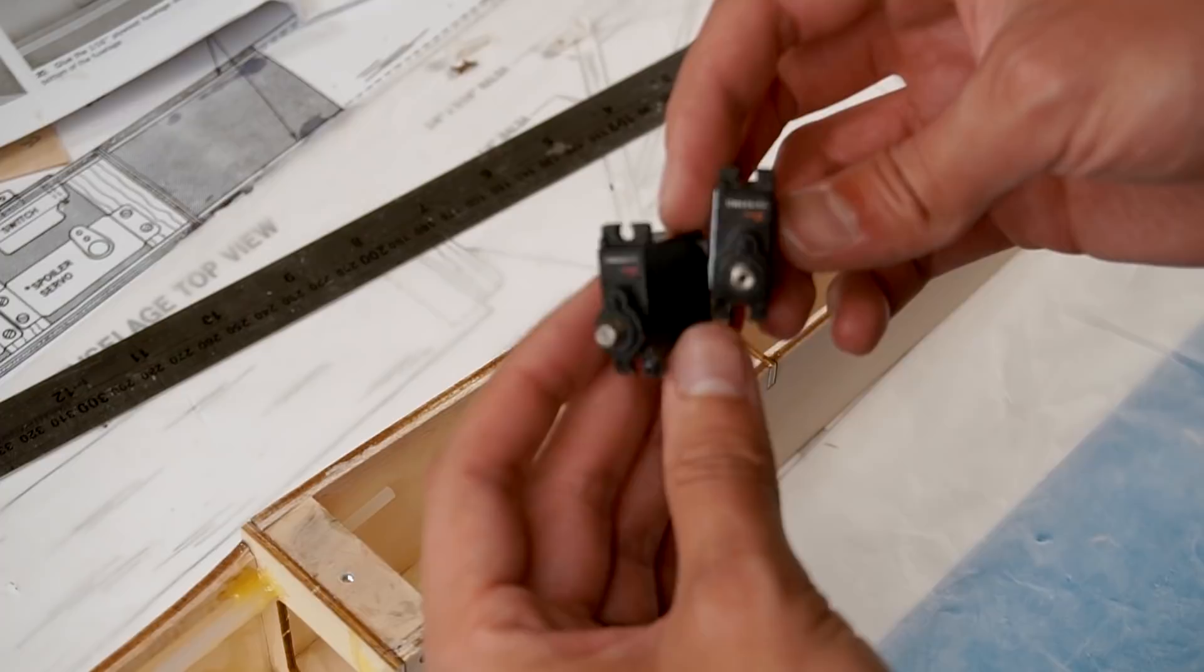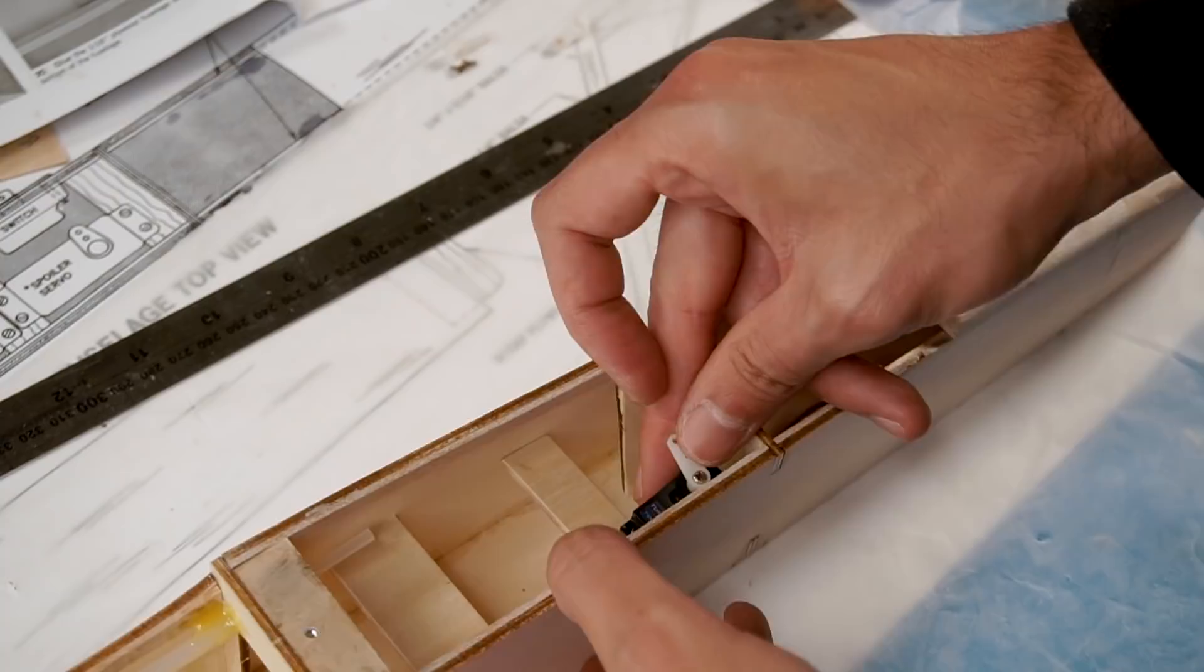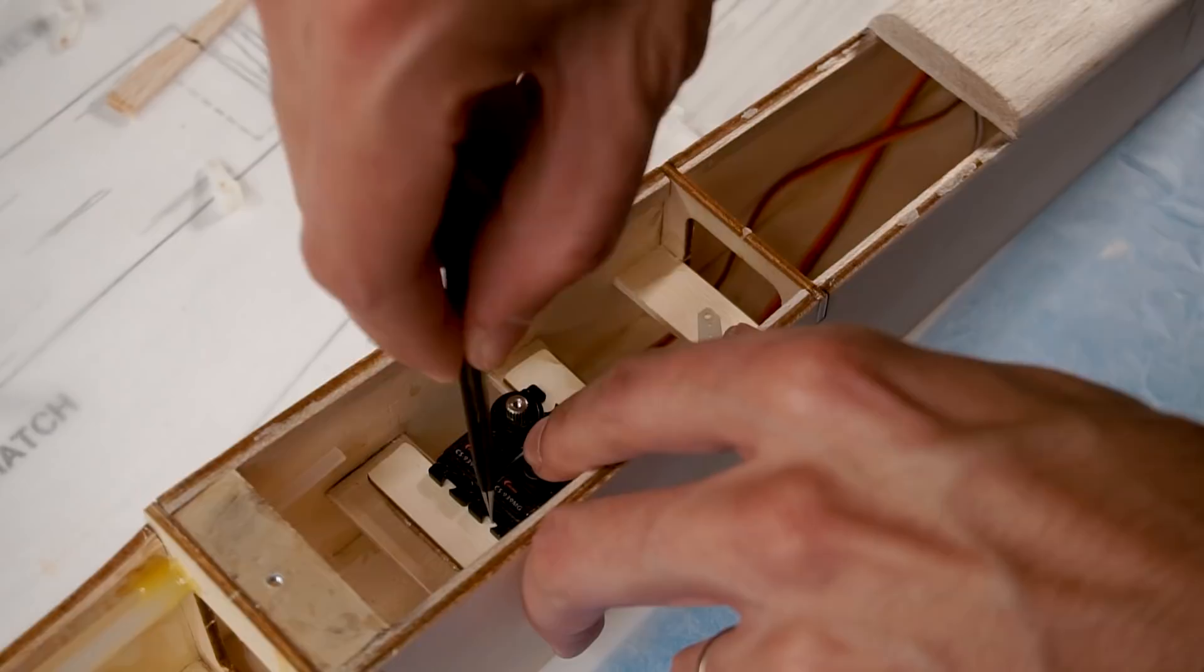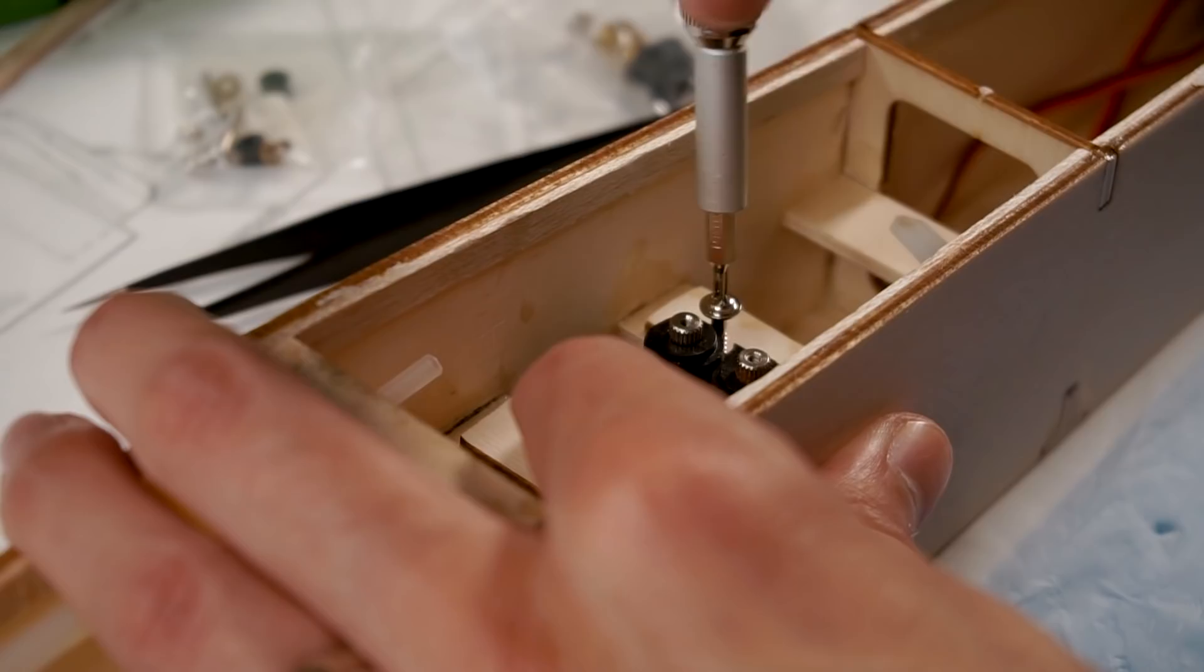Now I'm going to put the servos. I'm using micro servos but they are very strong and metal gear—they'll do the job just fine. This glider was originally designed for standard servos, but those are very big and heavy, so I'm saving a ton of space and weight, although I will have to put more weight afterwards to balance the airplane.